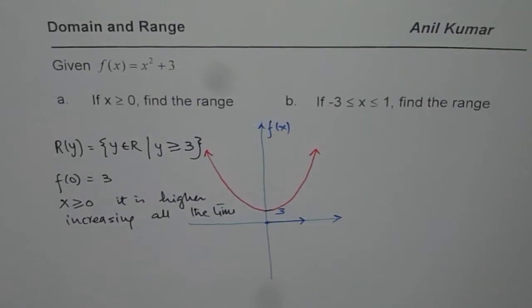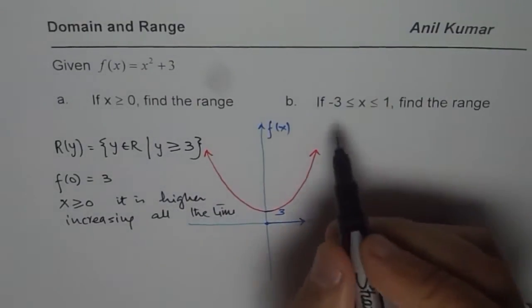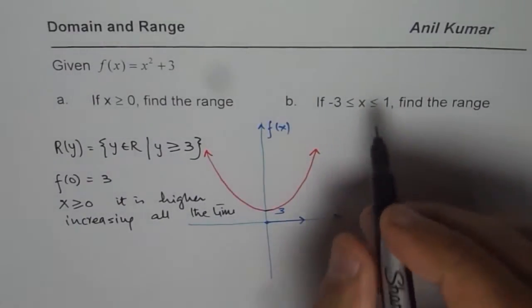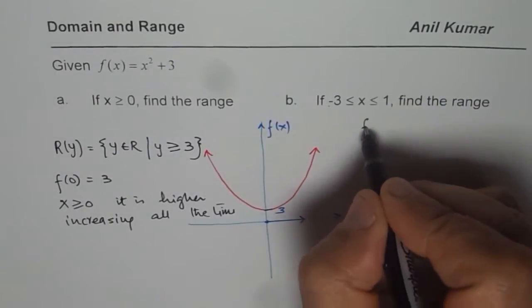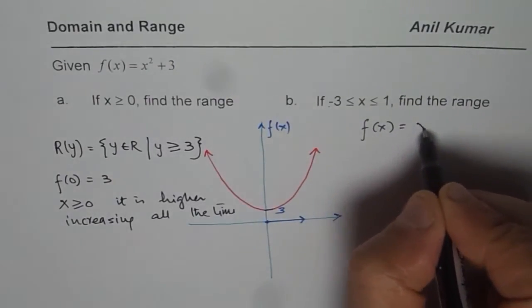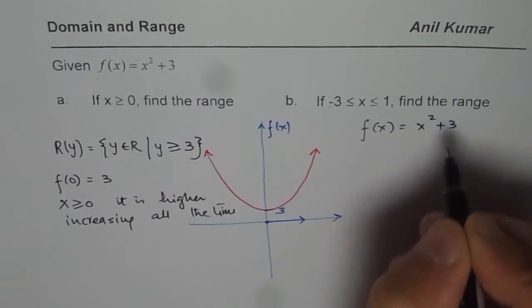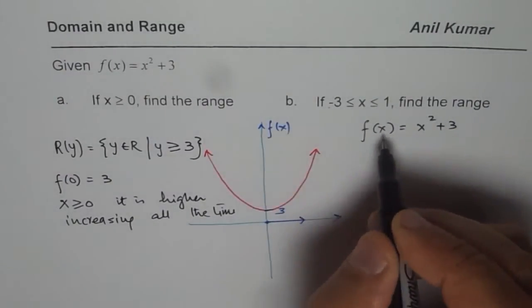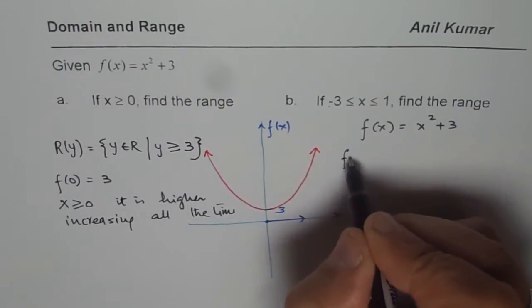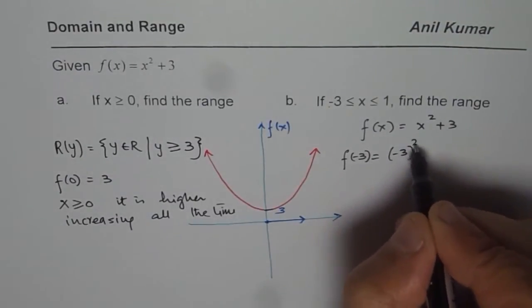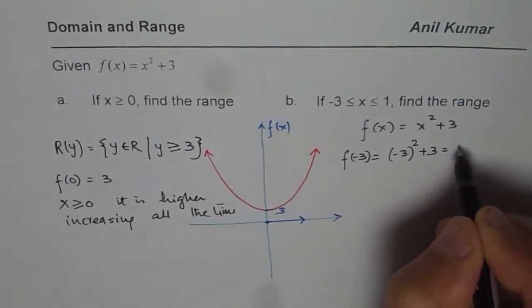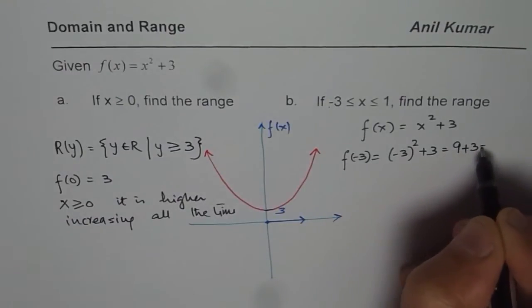Now let us consider the second case, where we are restricting the domain to minus 3 and 1. So in this particular case, we are talking about this same function, which is x square plus 3. Let us find its values at minus 3. So if I write f of minus 3, what do I get? I get minus 3 square plus 3, which is 9 plus 3, and that is 12.